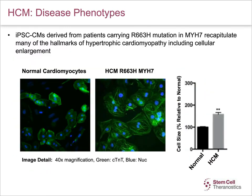This slide shows a comparison between normal cardiomyocytes and HCM-derived cardiomyocytes. When cells are stained with CTNT shown as green fluorescence and nuclear stain shown as blue, the HCM cardiomyocytes in the middle panel show a clear enlargement in cell size compared to the control. The panel on the extreme right shows a bar graph comparing cell size, with a significant increase visible in the HCM cardiomyocytes.